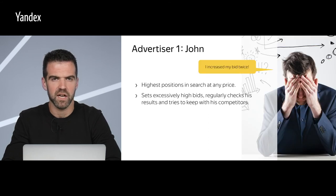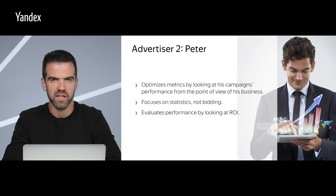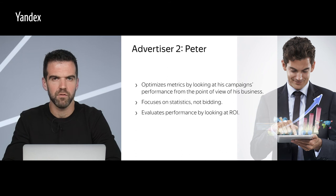Let's take two hypothetical advertisers as an example. First, we have John. John wants to serve ads at the highest positions in search results at any price — he sets excessively high bids, regularly pays attention to his results, and is constantly keeping track of his competition. Our second example is Peter. He optimizes metrics that take into account ad effectiveness from a business point of view, focuses on statistics rather than bidding, and evaluates his campaign's effectiveness by looking at ROI. Peter's approach appears much more effective than John's.